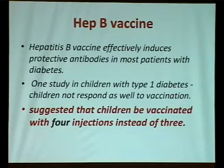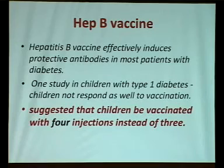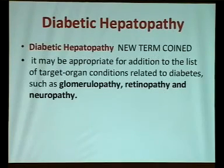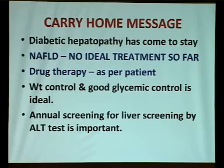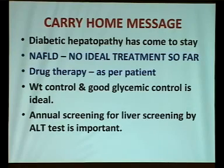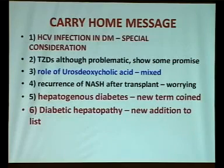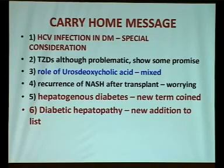Hepatitis B vaccine effectively induces protective antibodies in most diabetic patients, but children with type 1 diabetes may not respond well — they may need 4 injections instead of 3. The new term 'diabetic hepatopathy' can be added alongside diabetic glomerulopathy, diabetic retinopathy, and diabetic neuropathy. Key take-home messages: diabetic hepatopathy has come to stay; NAFLD has no ideal treatment so far; drug therapy should be individualized; weight and glycemic control are ideal; routine liver ALT screening is important; HCV infection in diabetes deserves special consideration; thiazolidinediones show some improvement; and hepatogenous diabetes is a newly coined term.